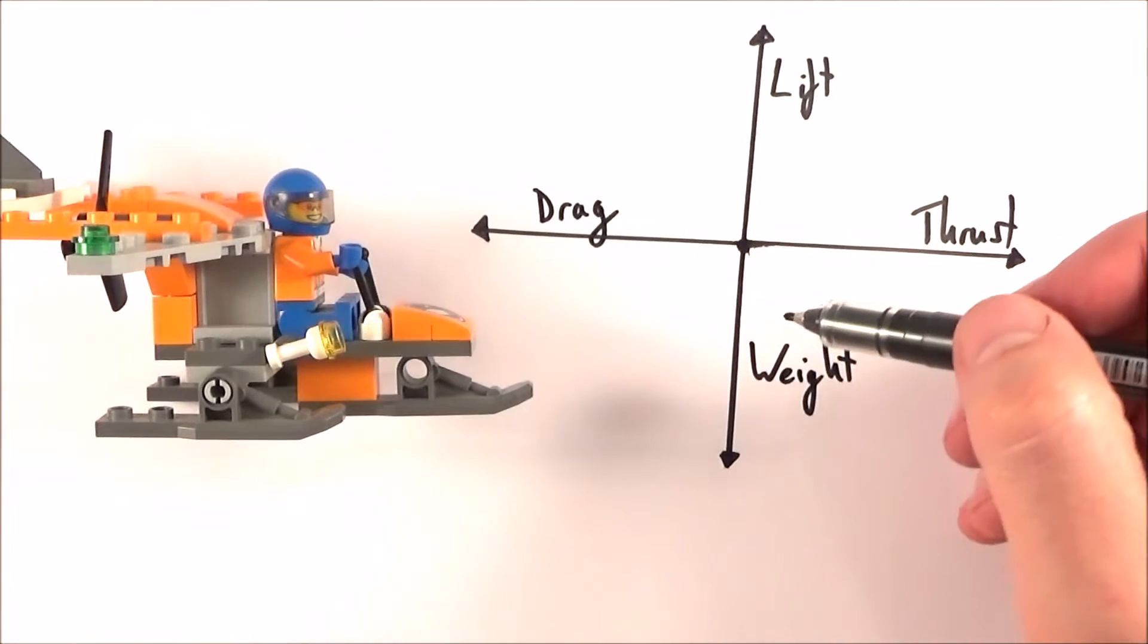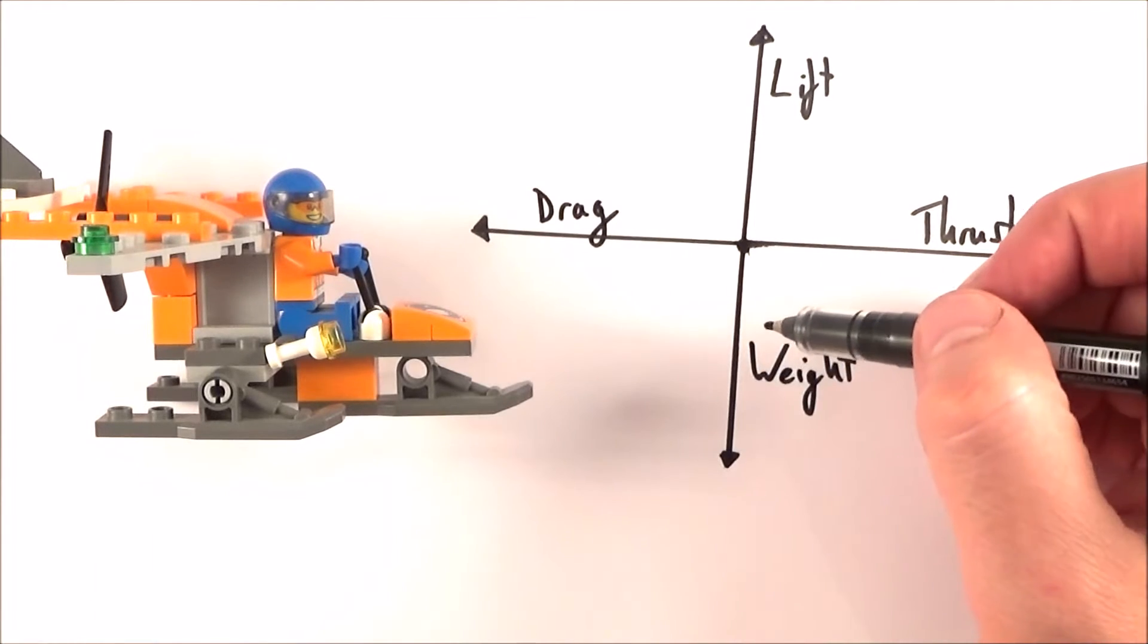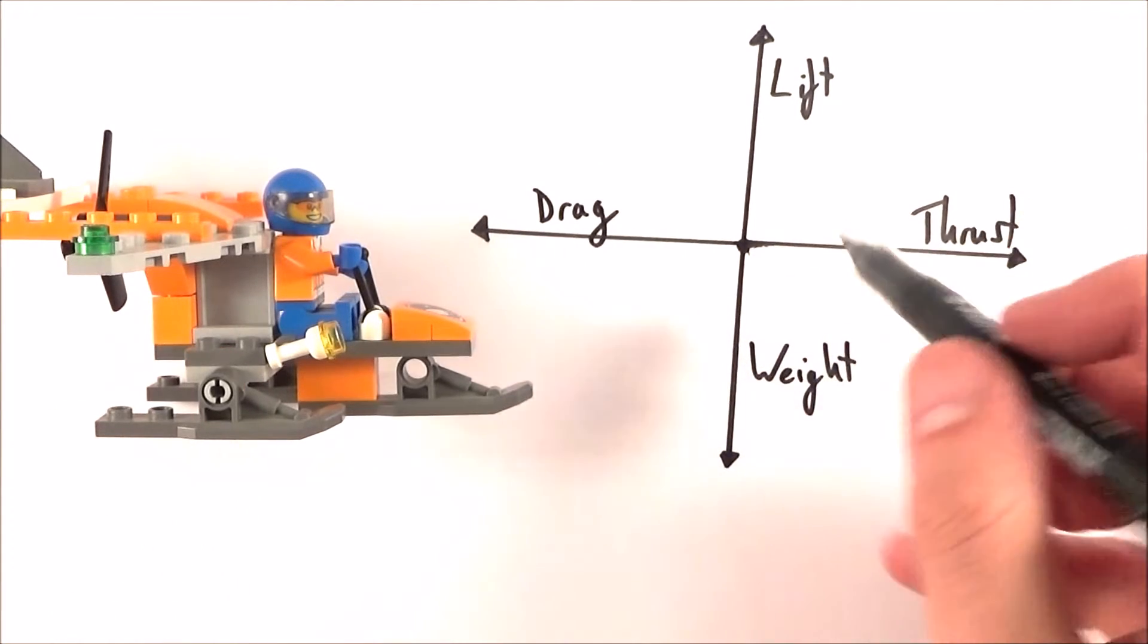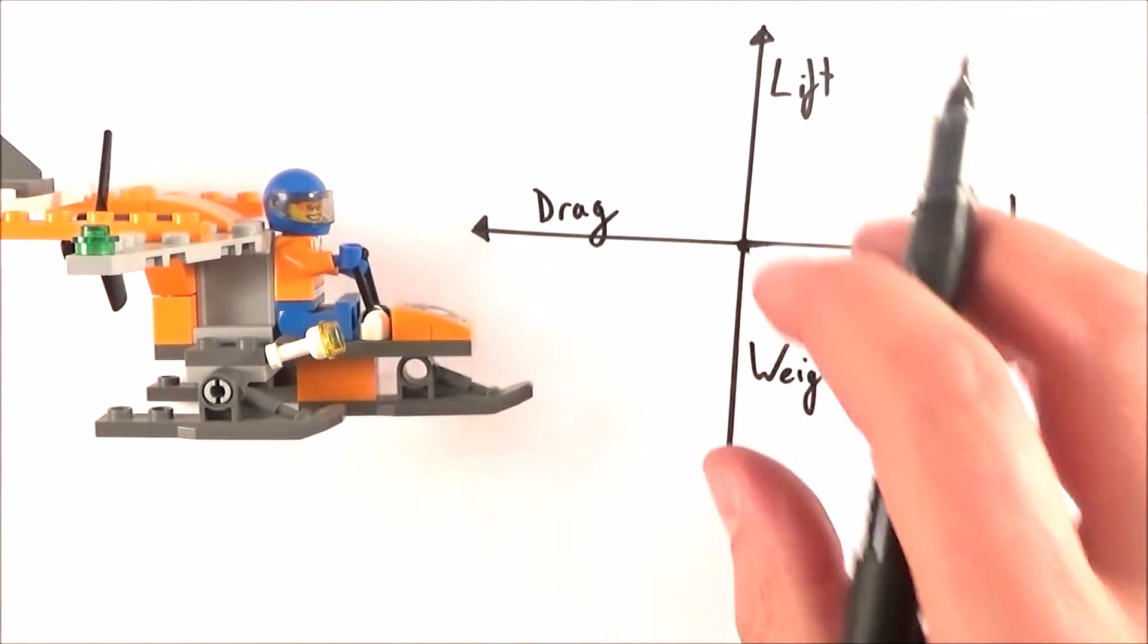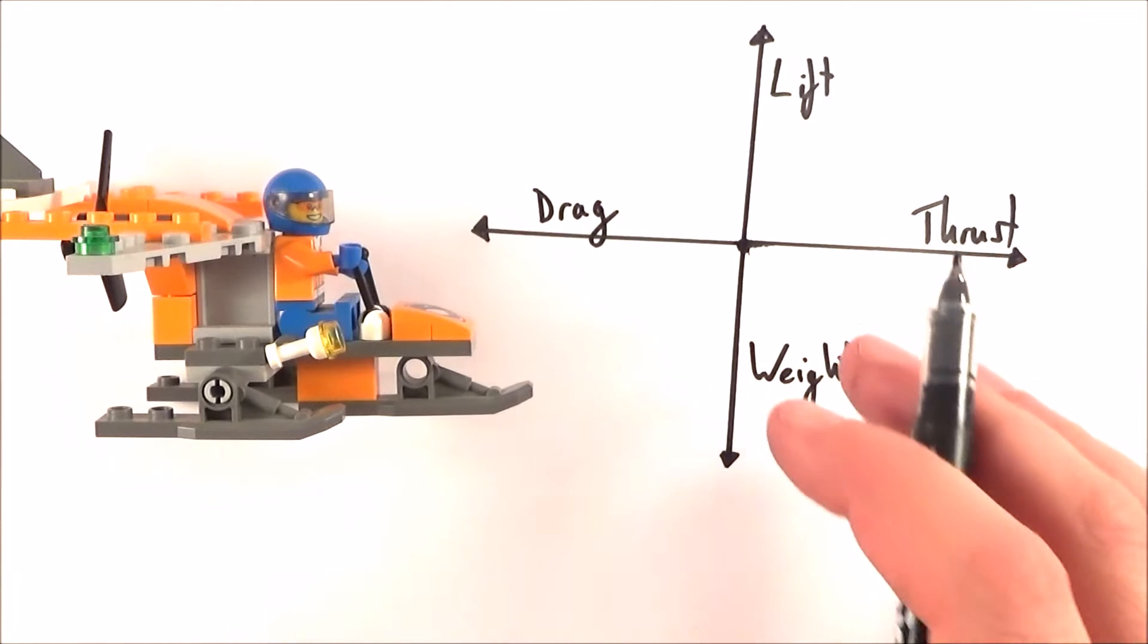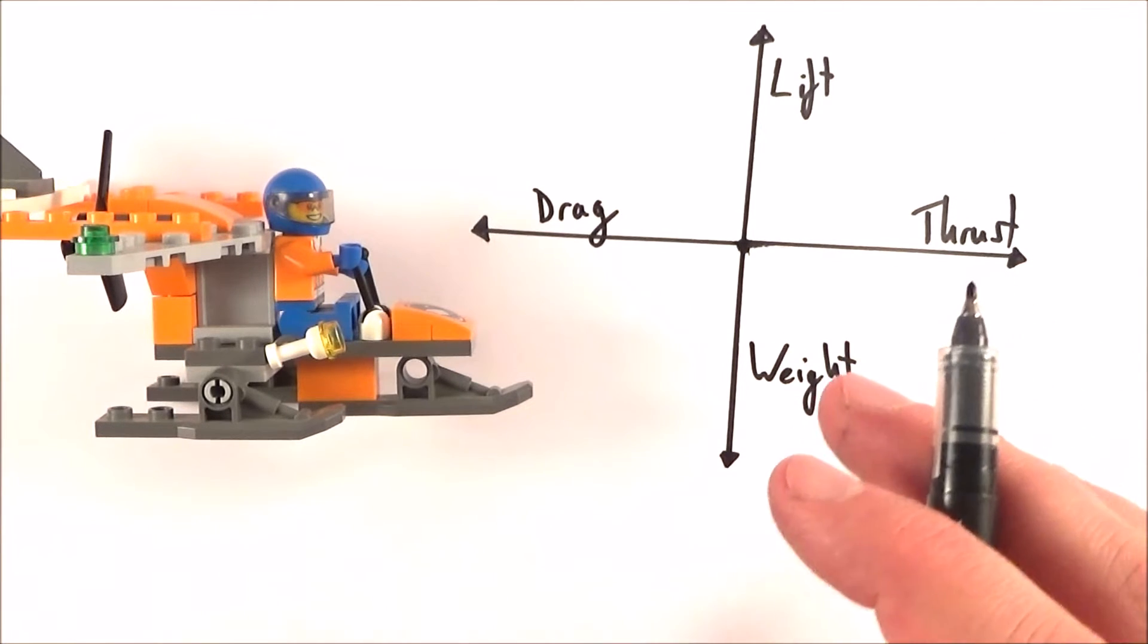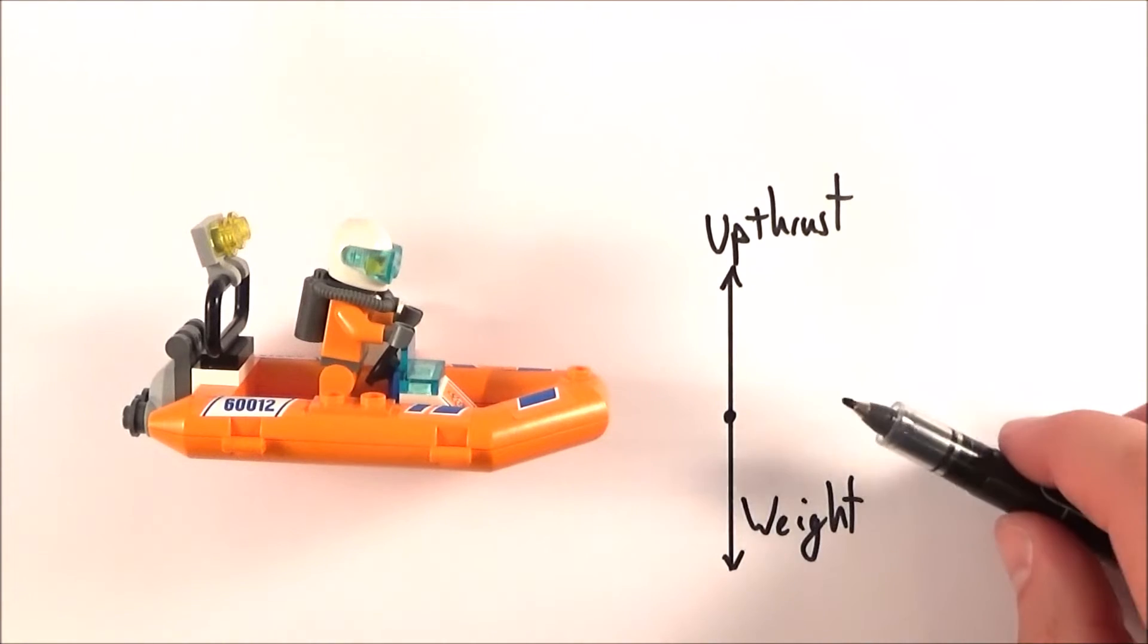What we have here is my free body diagram for this real life situation. I've got the thrust, the drag, the lift, and the weight. We can't see these forces, but by visualizing real world objects like this, it makes it a lot easier for any subsequent calculations.